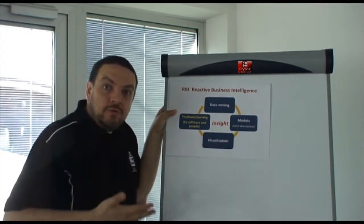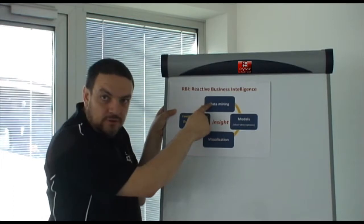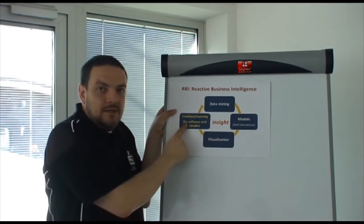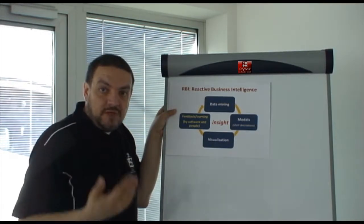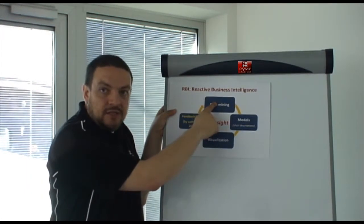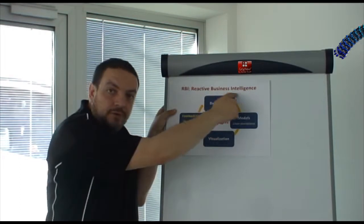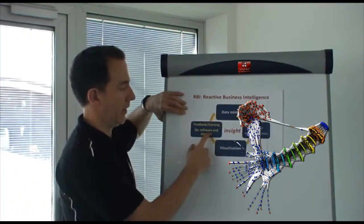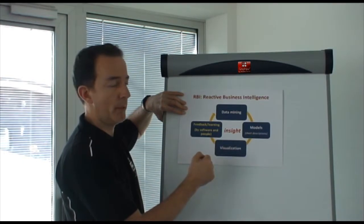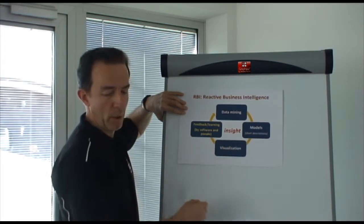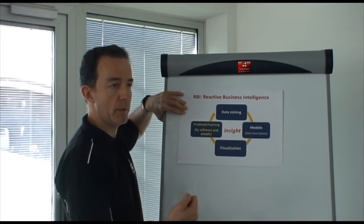What we propose in reactive business intelligence is to close the loop. So by getting feedback either by people or by software, we can refine our data mining process, refine our models, create better visualization. And this loop can go on and on. So we want the software to react, to be responsive, to respond in order to adapt to people's needs. And vice versa, we want to allow people to learn about the capabilities when they solve a problem, when they build a model.